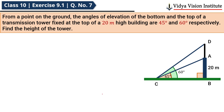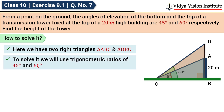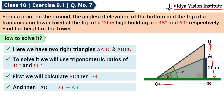अब इस question को हम कैसे solve करेंगे। इस figure को ध्यान से देखिए। यहाँ पर हमारे पास दो right angle triangles हैं — triangle ABC और triangle DBC। तो हम trigonometric ratios का use करेंगे। We will use trigonometric ratios of 45 degree and 60 degree to calculate BC and DB. सबसे पहले BC की value निकालेंगे, उसके बाद DB की value, and after that AD is equal to DB minus AB।